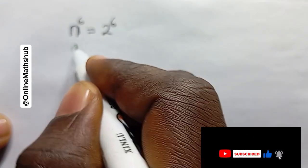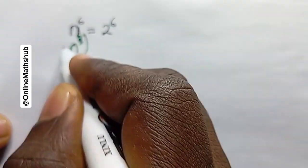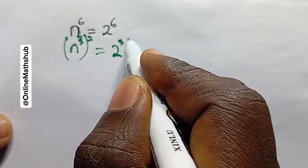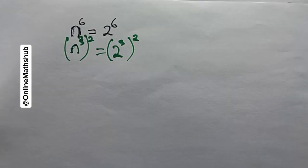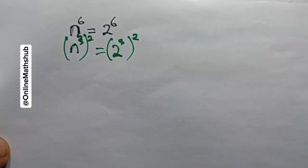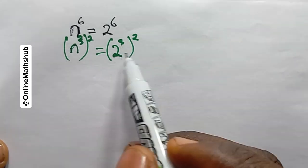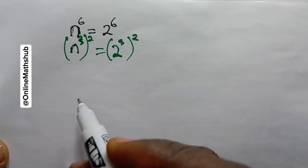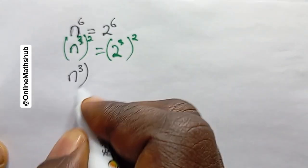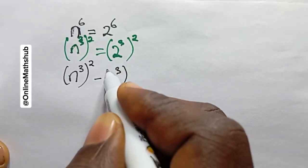I'm going to write n^6 as n^3 raised to the power 2, and do the same for 2^6, writing it as 2^3 raised to the power 2. I haven't changed the equation because multiplying the 2 and 3 gives 6. Now I'm going to subtract this term from both sides, giving us (n^3)^2 minus (2^3)^2.